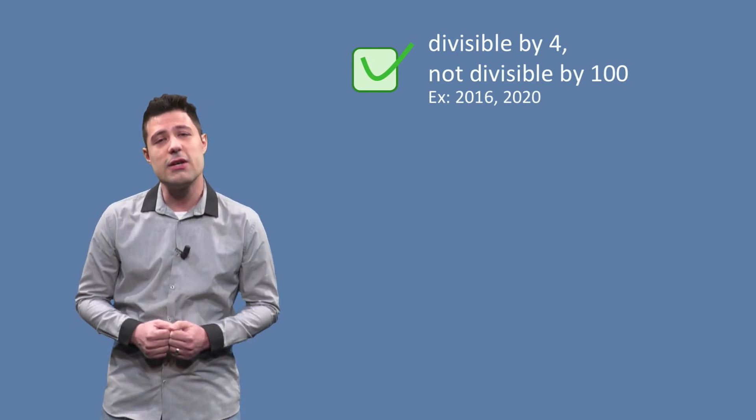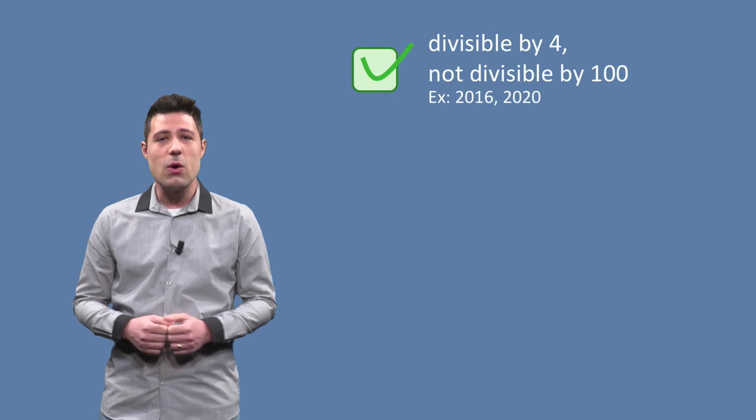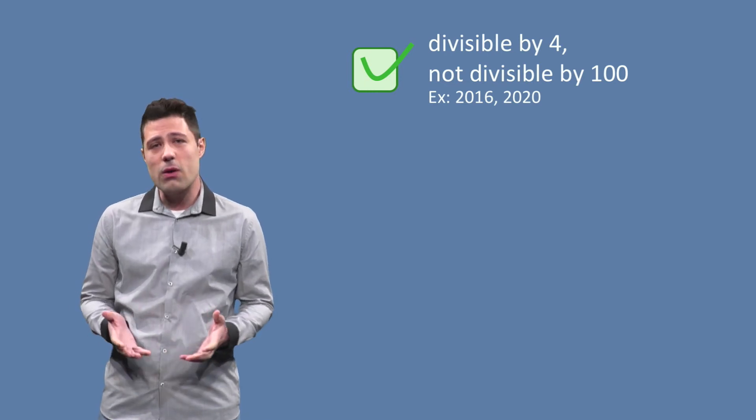The first one is years divisible by 4 and not divisible by 100. As concrete examples, years like 2016 or 2020 fall into this partition.